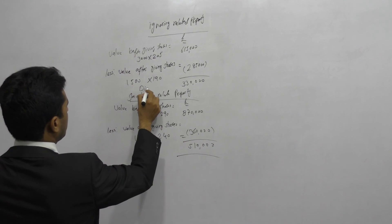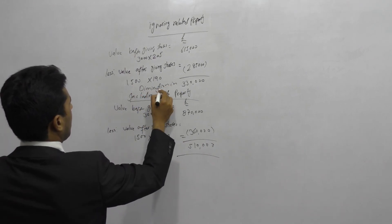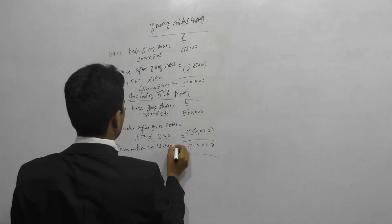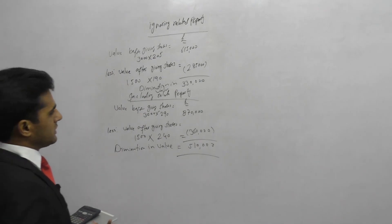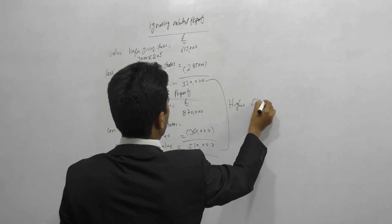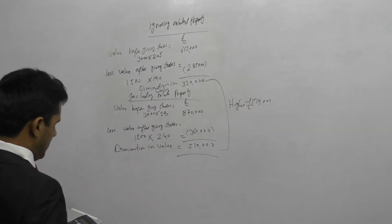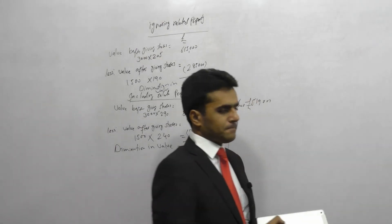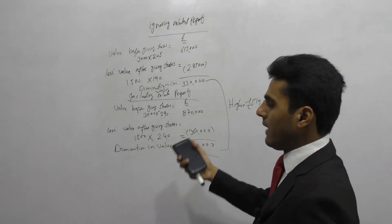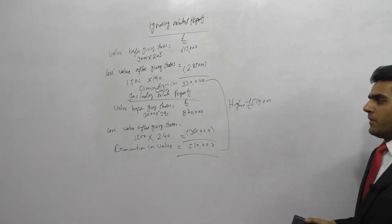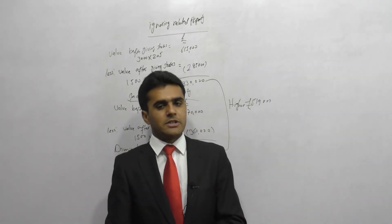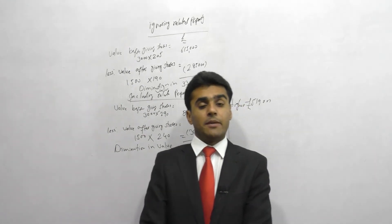Both figures represent the diminution in value — the reduction in Brad's estate. We take the higher of the two: £330,000 ignoring related property versus £510,000 including related property. The higher value is £510,000, and that is the amount used as the value of the transfer when calculating inheritance tax. That's it for this video; we will continue with inheritance tax in our next video covering the remaining topics.